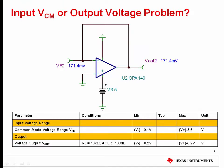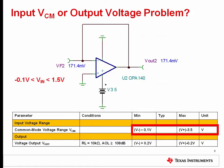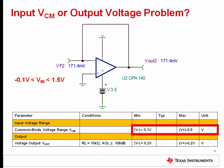Let's now consider a real-world circuit example. We have an op amp in a basic buffer configuration. One might expect to see 0 volts at the output or a small voltage offset depending on the VOS specification of the device. However, after running a DC simulation, we see that the output is almost 200 millivolts. The maximum VOS of this device is only 120 microvolts, so what's the problem? The input common mode range is computed to be from minus 0.1 to 1.5 volts, and the input is connected to ground at 0 volts, which is within that range — so there is no common mode input voltage violation.